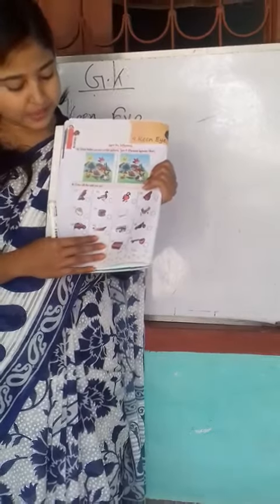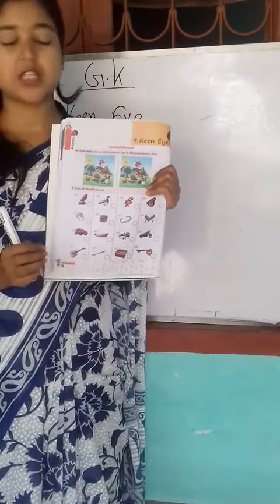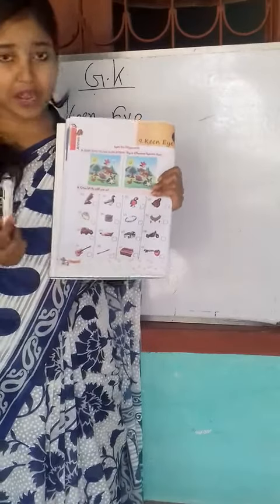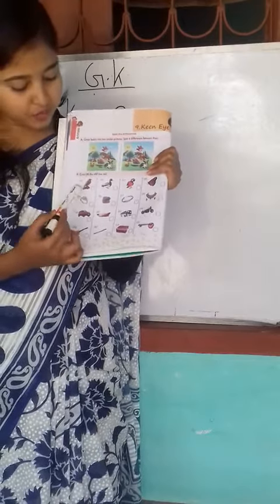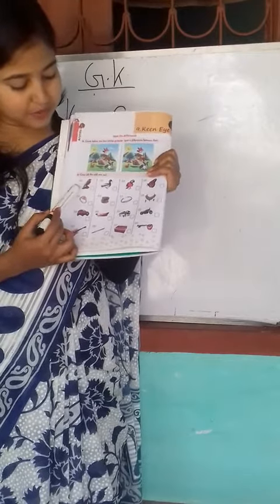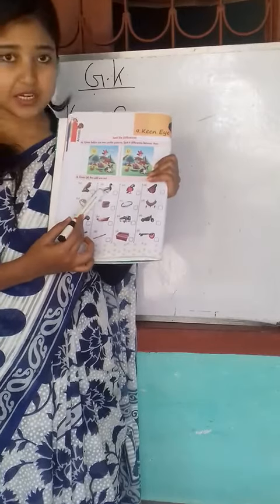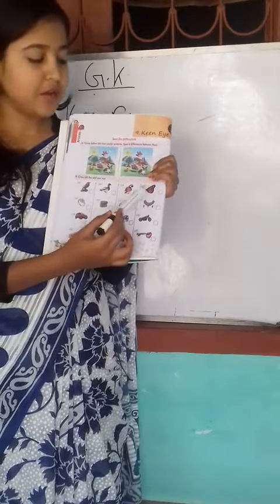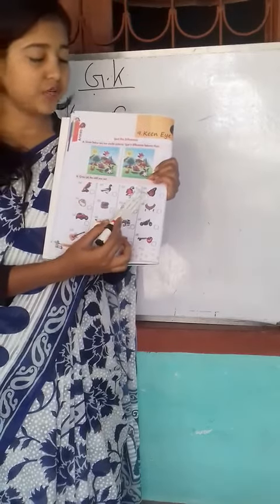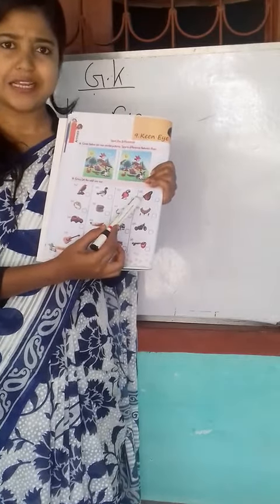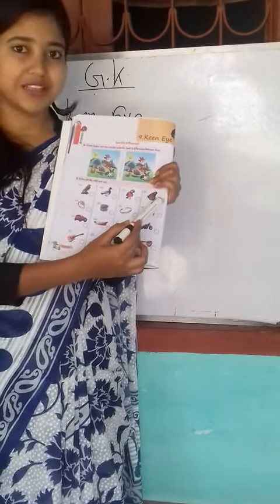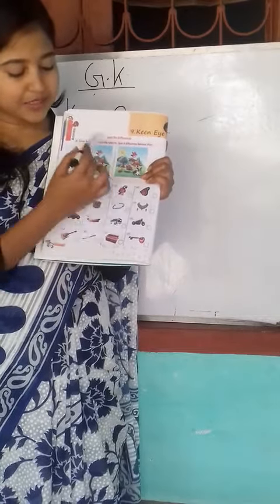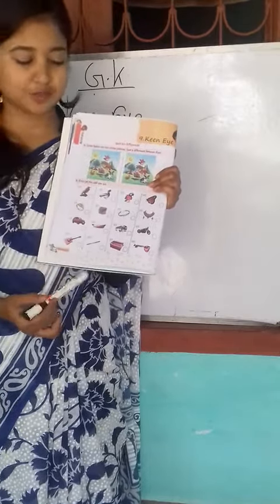And here in option B, you have to cross the odd one out. I am showing you how: the first one is a bird, second one is a duck — it's also a bird, third is a parrot — it's also a bird. The fourth one is a butterfly, it's not a bird, it's an insect. So you will cross out this animal. You have to do the same thing with the other objects also.